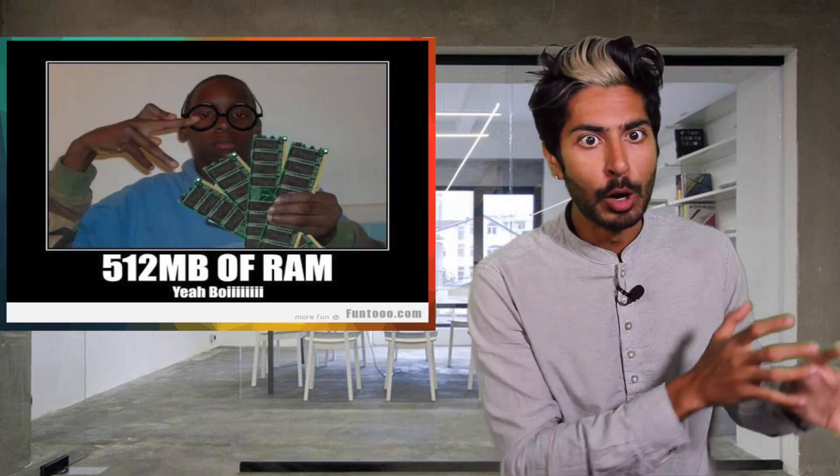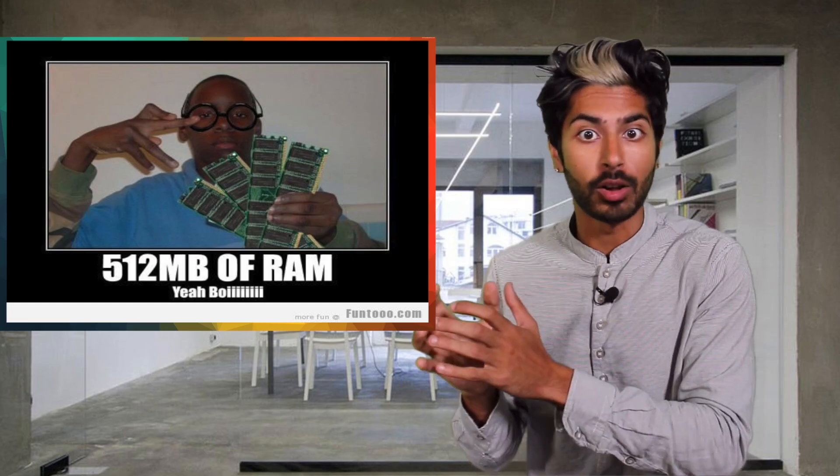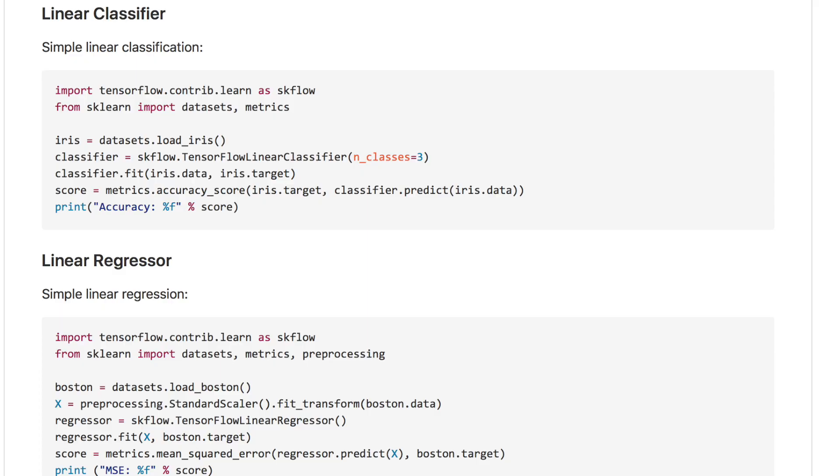But the one type of machine learning algorithm it doesn't let you implement is a neural network. It doesn't provide GPU support either, which is what helps neural networks scale. Since like two months ago, pretty much every single general purpose algorithm that Scikit-learn implemented has since been implemented in TensorFlow. Scikit, you just got learned.